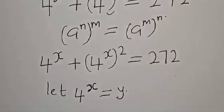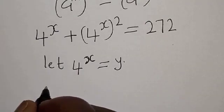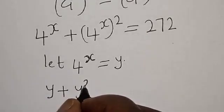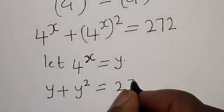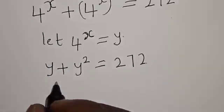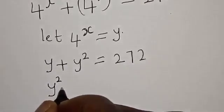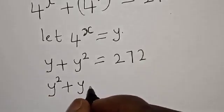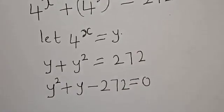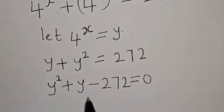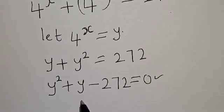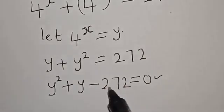This becomes 4 raised to power x plus 4 raised to power x squared is equal to 272. Now let 4 raised to power x equal y. Then we have y plus y squared is equal to 272. Rearranging, we have y squared plus y minus 272 is equal to zero. This is a quadratic equation that can be solved by factorization or the quadratic formula, but in this case I'm going to use the factorization method.